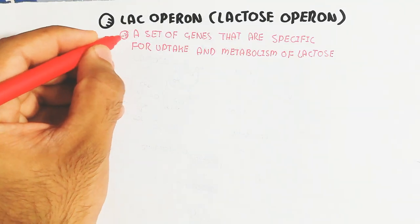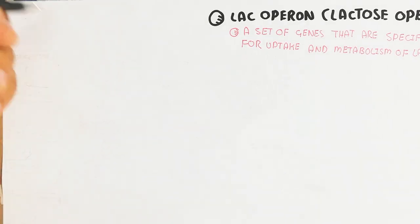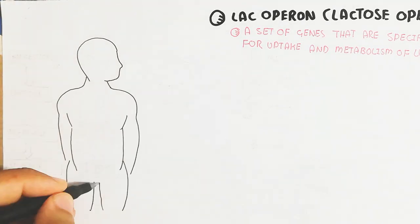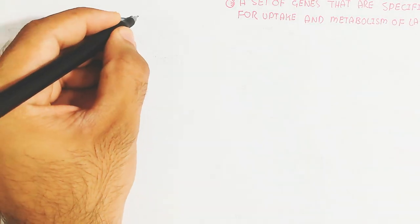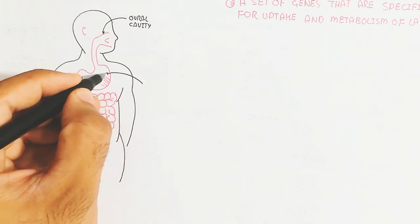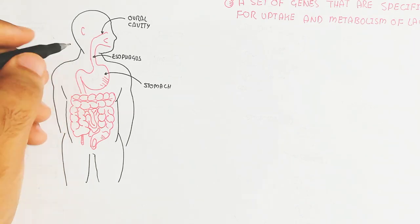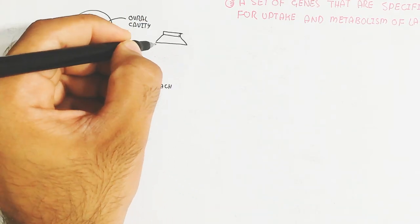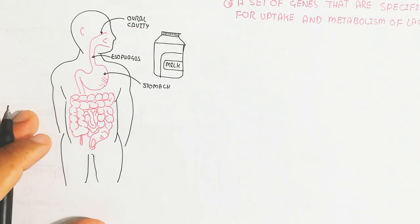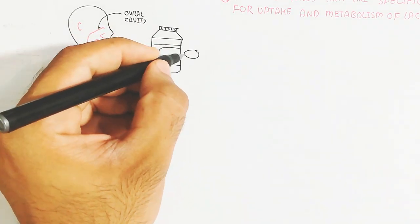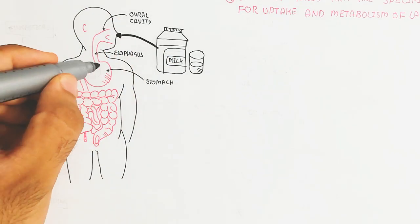Let's begin with the digestive system. When we take milk, it contains lactose — a disaccharide, a type of sugar. The digestive system includes the esophagus, stomach, small intestine, large intestine, rectum, anus, and appendix. The large intestine is also known as the colon.